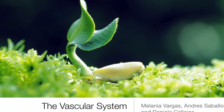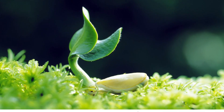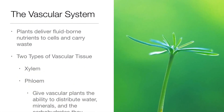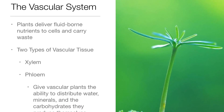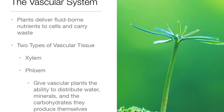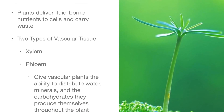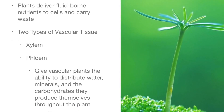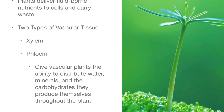Lesson 21.2: The Vascular System. Plants deliver fluid-borne nutrients to cells and carry waste. Two types of vascular tissue, xylem and phloem, give vascular plants the ability to distribute water, minerals, and the carbohydrates they produce themselves throughout the plant.